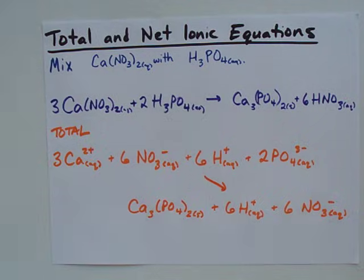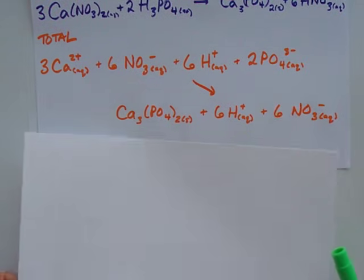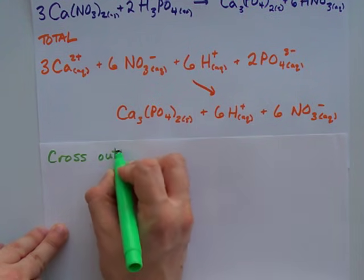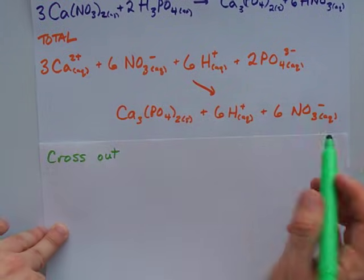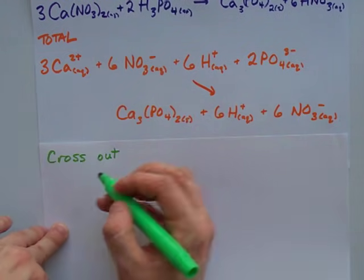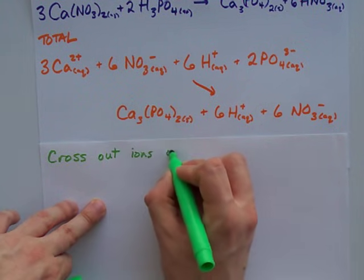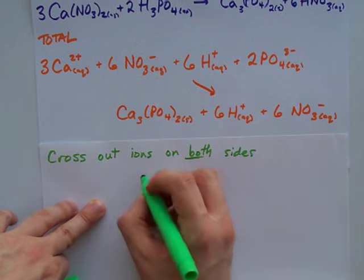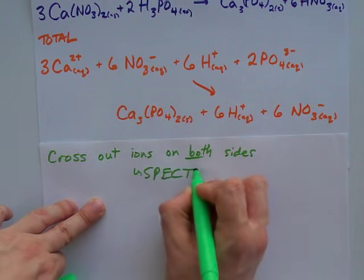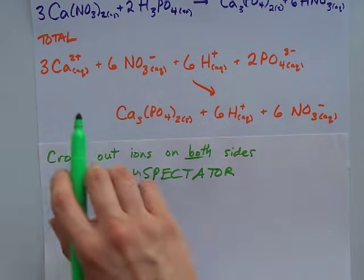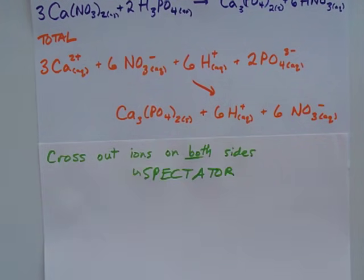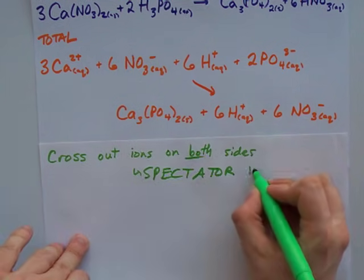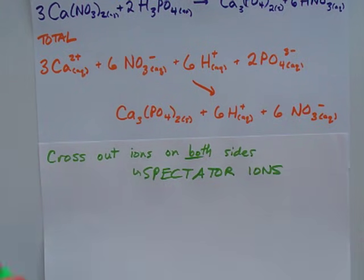If you want a net ionic equation, what you have to do is cross out things that appear on both sides of the equation. And by that I mean the left and the right, or because I ran out of space, the top and bottom for me. Cross out ions that appear on both sides of the equation. These are called spectator ions, and the reason for that is, while the calcium and phosphates get together to make a solid, the hydrogens just sit there, and the nitrates just sit there. They're not doing anything special, they're just watching the show going on in front of them.